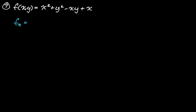x² gives us 2x, y² goes away. Negative xy gives us minus y, and then x gives us 1. So we're taking the derivative with respect to x.